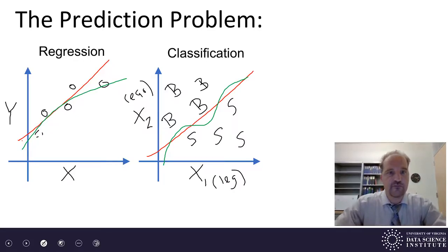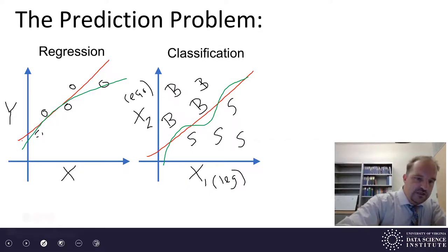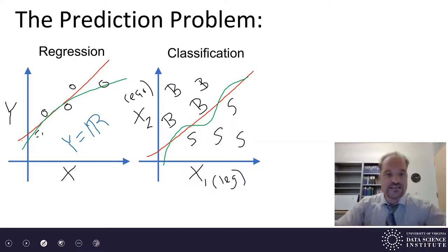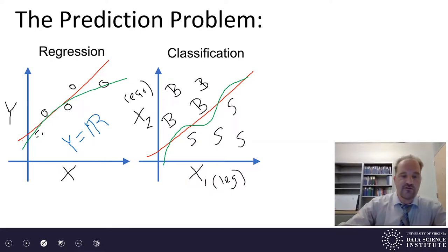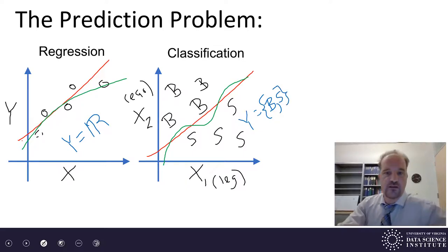This type of prediction problem is called the classification problem. The difference between regression and classification: in regression, our y values are a continuous set of real numbers. In the classification problem, y takes on its values in some discrete set — in this case, y is in the set that includes the label basset hound or shepherd.